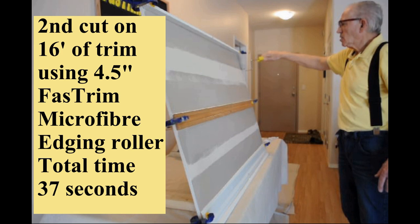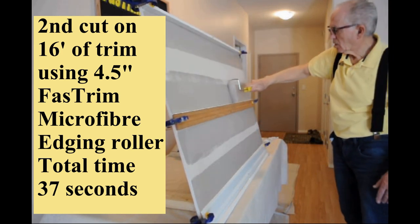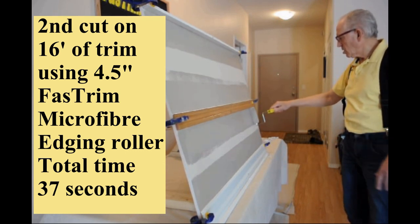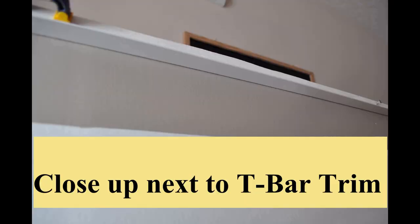These close-up shots show a crisp, plain finish with no brush lines, no paint on the trim. Those trims were T-bar ceiling trim, tile shooter trim, stained oak trim, and painted baseboards.